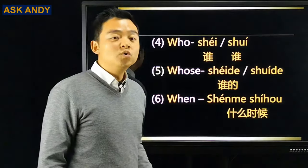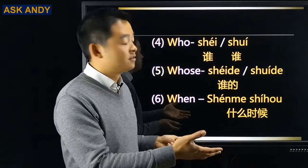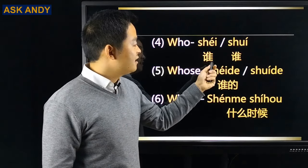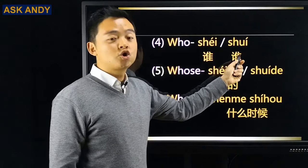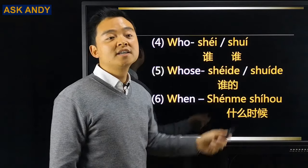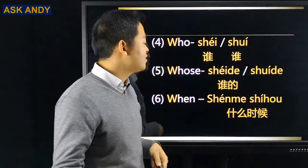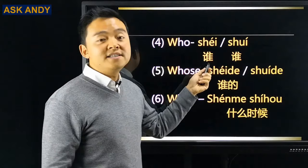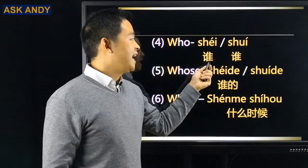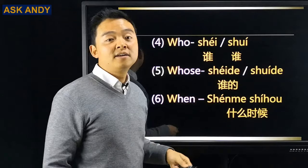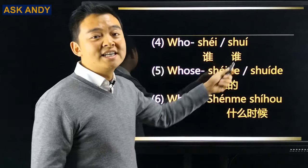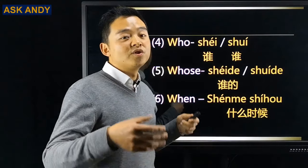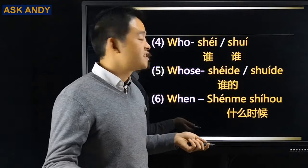Number four: who. There are two versions: 谁 (shéi) and 谁 (shuí). I recommend 谁 (shéi) — it's easier to pronounce, and 水 (shuǐ) sounds like 'water,' so the wrong tone may cause confusion.